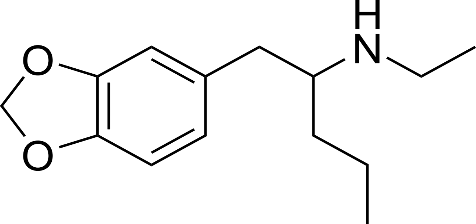N-ethyl-1,3-benzodioxylpentanamine, also known as Ethyl-K, or 3,4-methylenedioxy-N-ethyl-alpha-propylphenethylamine, is a psychoactive drug and member of the phenethylamine chemical class which acts as an entactogen, psychedelic, and stimulant.